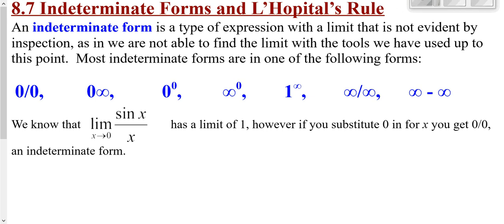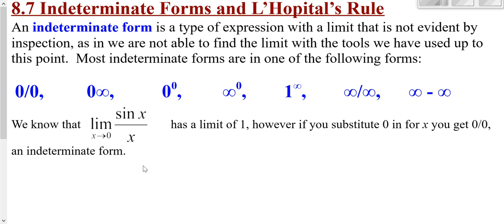Today we're going to take a look at L'Hôpital's Rule. L'Hôpital's Rule allows us to evaluate limits of indeterminate forms. We've looked at the indeterminate form of 0 over 0 before, earlier in this course during the CPM unit or Chapter 1. Here's an example: if we plug in 0, we get sine of 0, which is 0 over 0 — an indeterminate form. We know from the squeeze law that the limit is 1. We could also use L'Hôpital's Rule here.